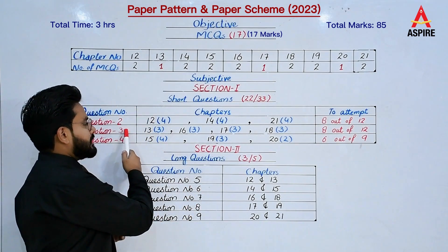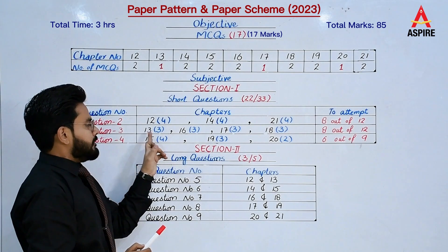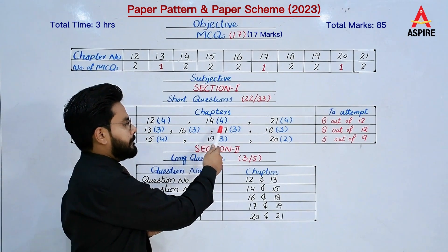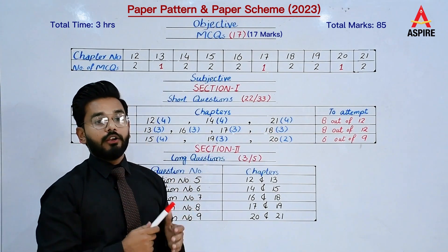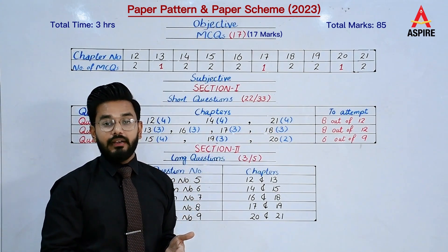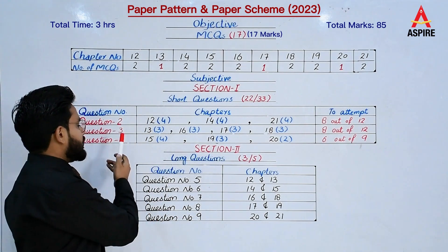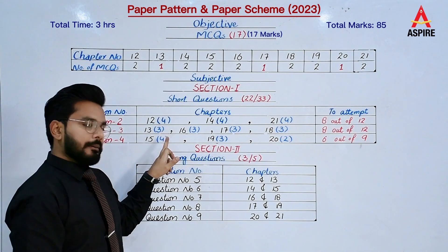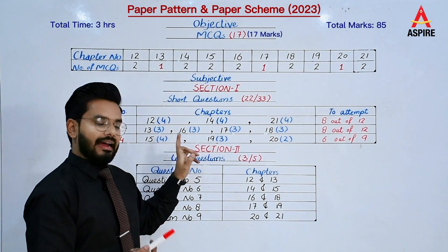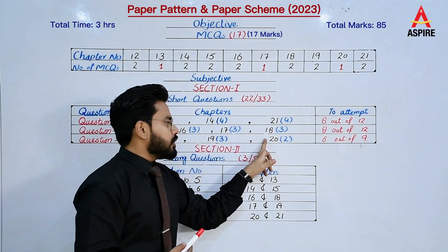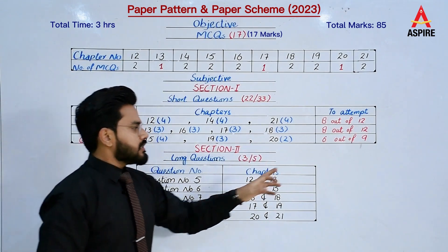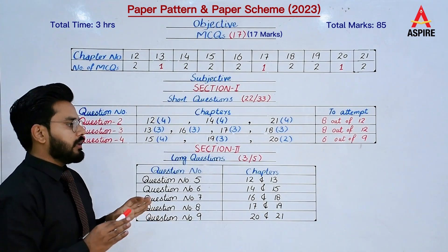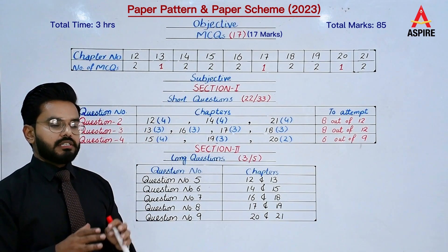Question number 3 covers chapters 13, 16, 17, and 18, with 3 questions each — total 12 — and you attempt 8. Question number 4 covers chapter 15 with 4 questions, chapter 19 with 3 questions, chapter 20 with 2 questions — total 9 questions — and you have to attempt all 9. This completes our short question section.